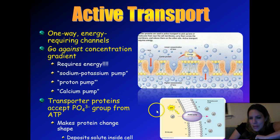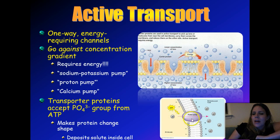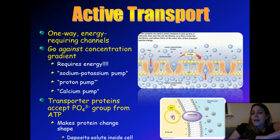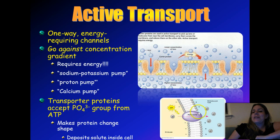Here's an example of a proton pump. A proton means hydrogen ion since it just has a charge of one. In this case, the hydrogen is more highly concentrated outside the cell than inside. But if we need that hydrogen to go from an area where it's less concentrated to an area where it's more concentrated, we need the help of a channel protein called a proton pump. Because we're going against the concentration gradient, we need ATP to fuel it.